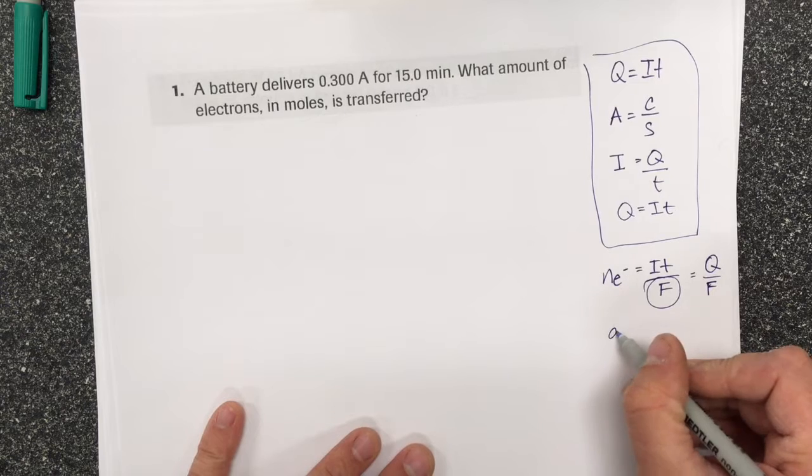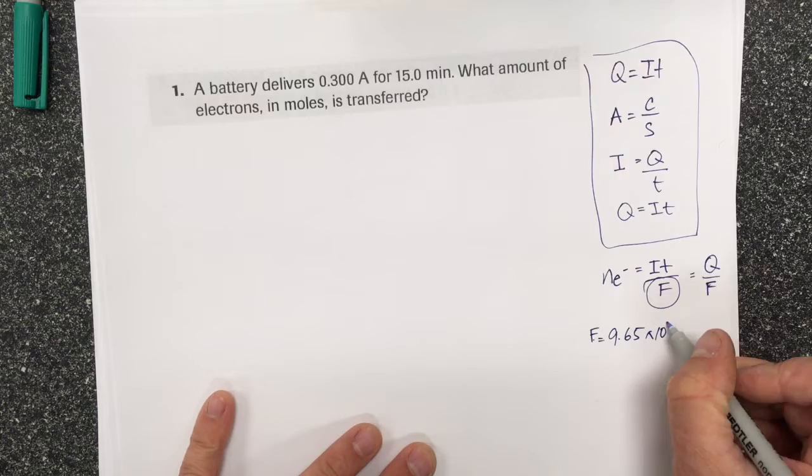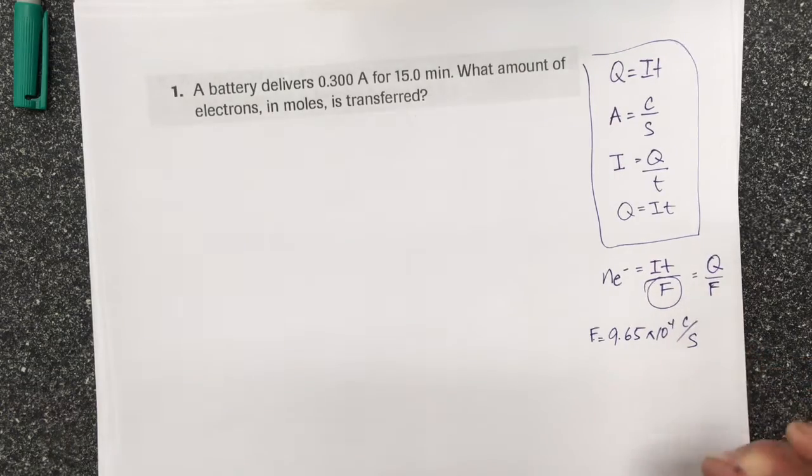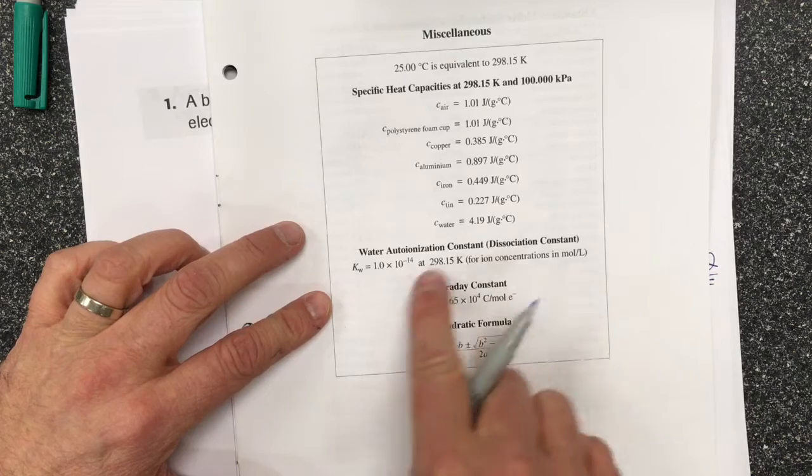Faraday's constant is 9.65 times 10 to the 4 coulombs per second. That can also be found in our data booklet here. So they give us the Faraday's constant.